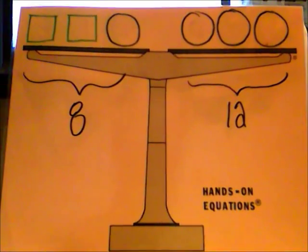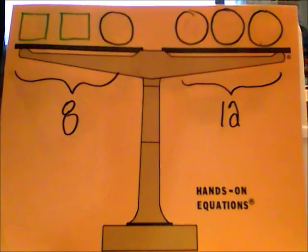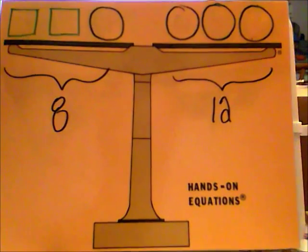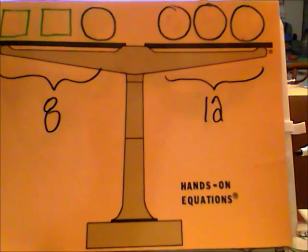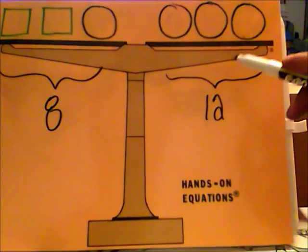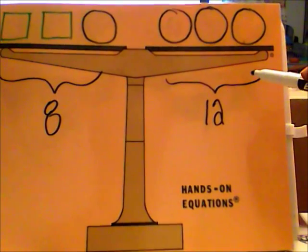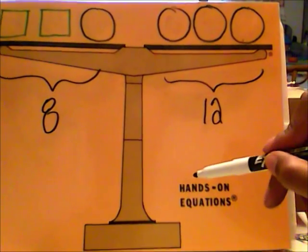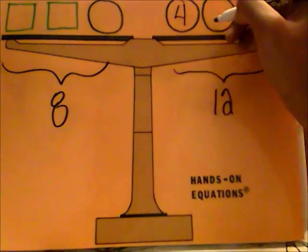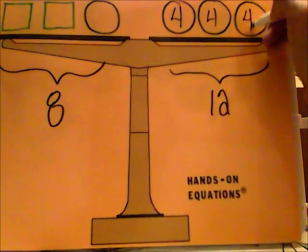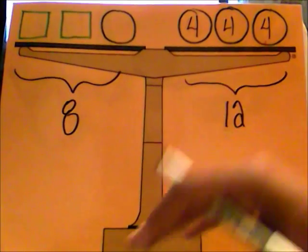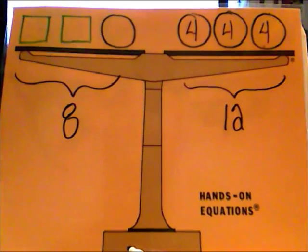I'm going to start with the right hand side and figure out how much each circle is worth, since the right hand side has all circles. If the right hand side has three circles and equals 12, then each circle is worth four — because four times three is 12. So each circle is worth four.